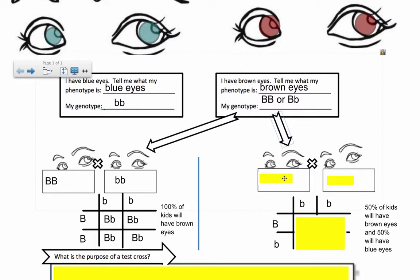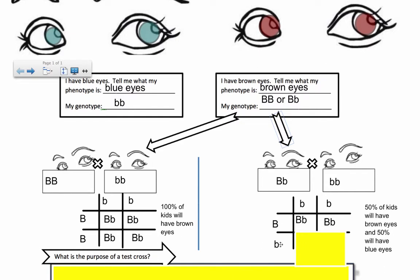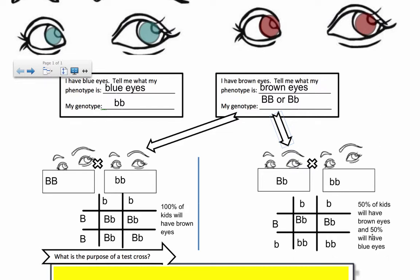If it's the other situation and this person is actually heterozygous big B little b, and then we cross them with the blue-eyed person, let's see what we get. We separate these gametes out by the law of segregation - there's a big B and a little b. I know for 50% of them they will be big B little b, just like before, but the other 50% will be little b little b. So the outcome here is 50% of the kids with brown eyes and 50% with blue eyes. It really depends on whether the parent has two copies of the dominant allele or is heterozygous - the outcome will be totally different. That's how you know. That's what a test cross is.